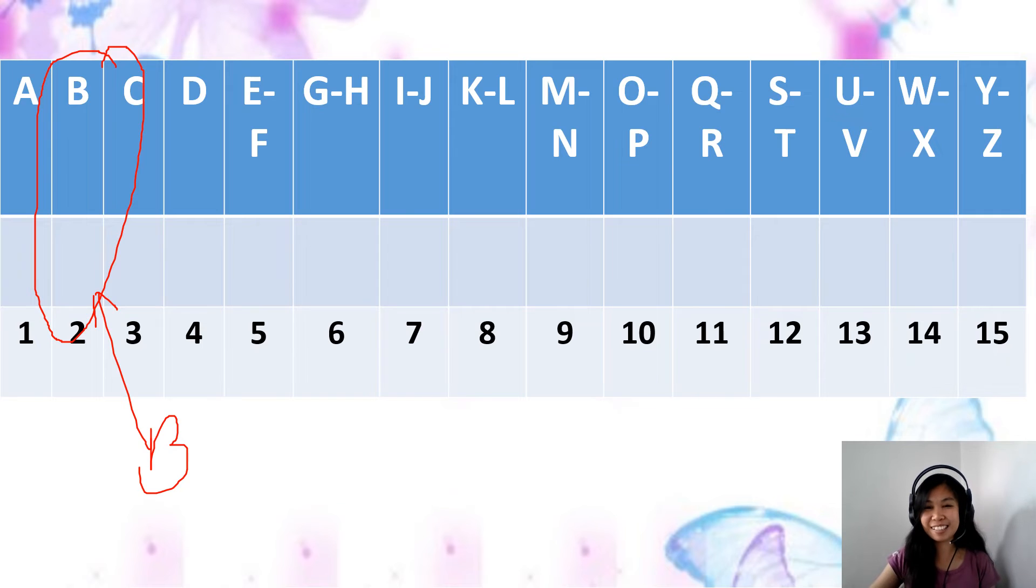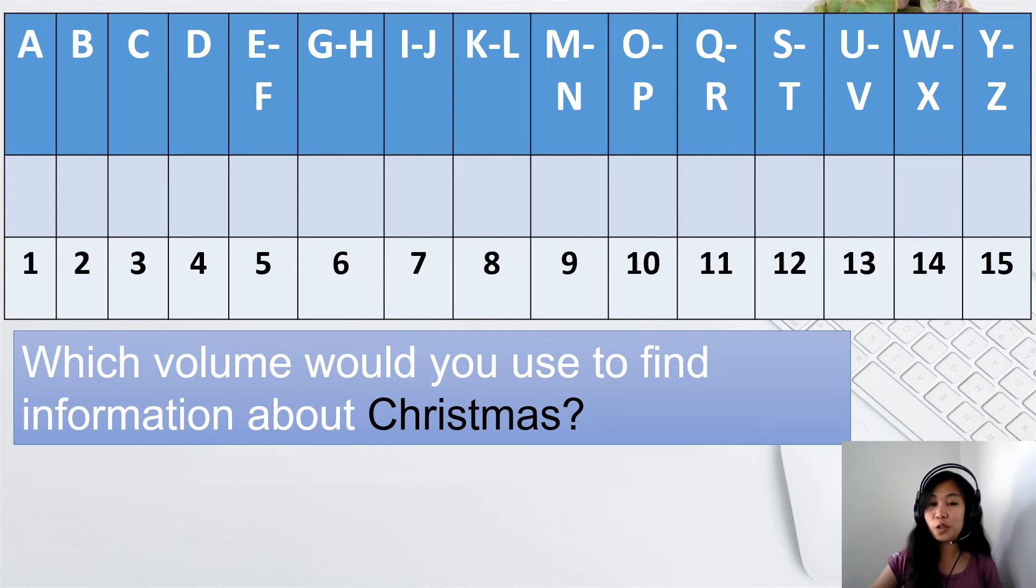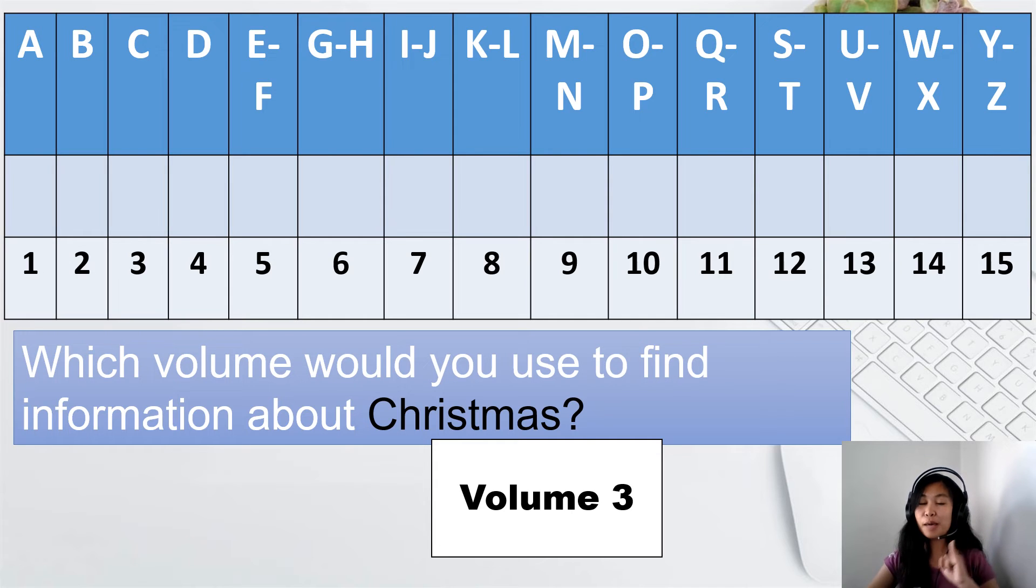Now, determine the volume number of the book you may refer to for the given topic. Are you ready? Let's get started. Number 1. Which volume would you use to find information about Manuel L. Quezon? Volume number 3. Why? Because Christmas is starting with letter C. You're doing great.